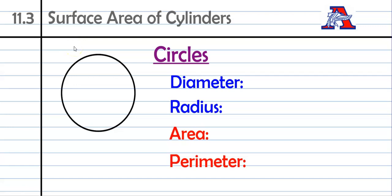First thing we need to talk about before we talk about the actual surface area of cylinders is circles, because cylinders obviously have circular bases. So on a circle, there is a diameter, which is the distance all the way across a circle.